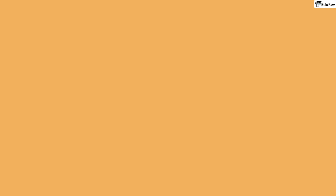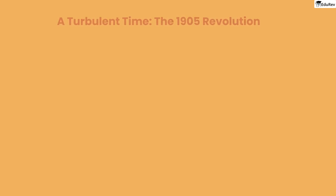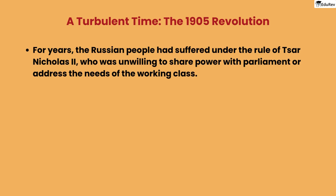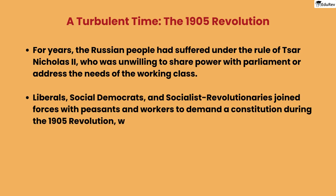Let's dive into a new topic: a turbulent time — the 1905 revolution. The 1905 revolution marked a turning point in Russian history, setting the stage for the events that would unfold in the coming years. For years, the Russian people had suffered under the rule of Tsar Nicholas II, who was unwilling to share power with parliament or address the needs of the working class. Liberals, social democrats, and socialist revolutionaries joined forces with peasants and workers to demand a constitution during the 1905 revolution, with support from nationalists and judaists.